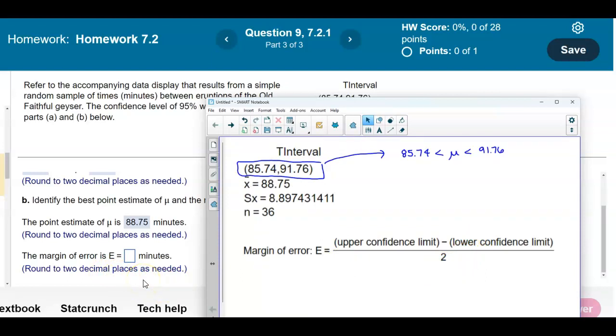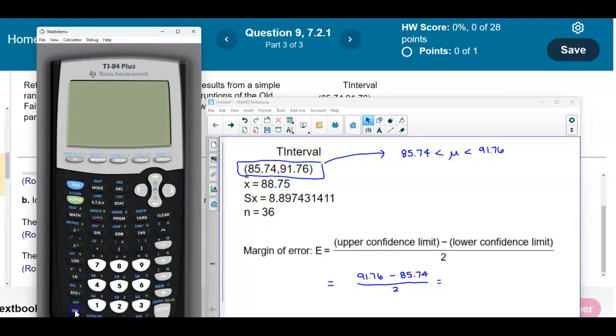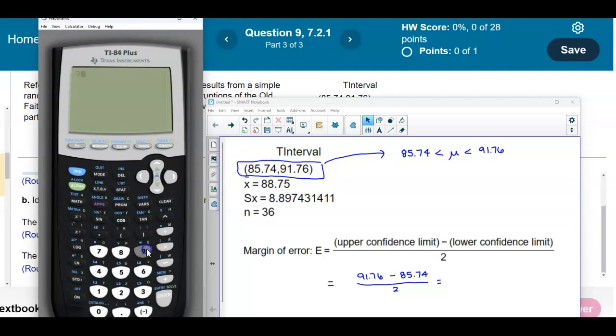They want us to round it to two decimal places. So if we take the upper confidence limit which is 91.76 and subtract the lower limit of 85.74 and then divide that by 2, let's go ahead and do that. On our calculator, we're going to take 91.76 and subtract 85.74 and then divide that by 2.